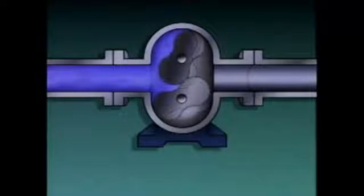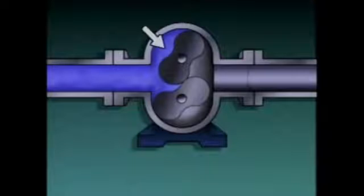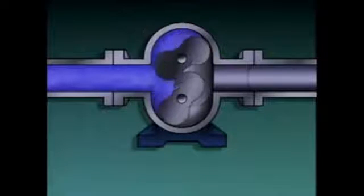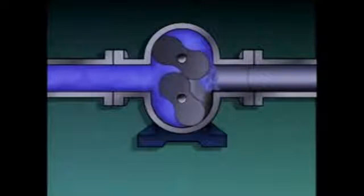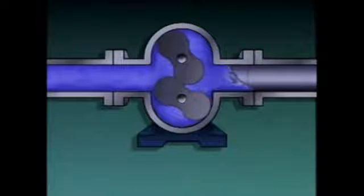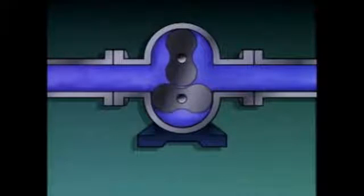During operation, the lobes rotate and draw in process liquid through the suction of the pump. As the lobes unmesh, gaps are formed and liquid is drawn into these gaps, then trapped in the spaces between the lobes and the casing. As the lobes continue to rotate, the liquid is moved along to the discharge of the pump, where it's forced out of the pump and into the discharge piping.